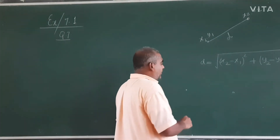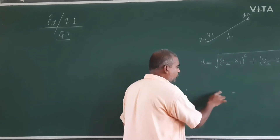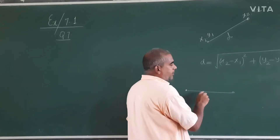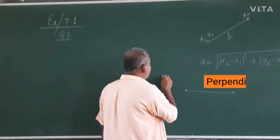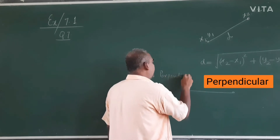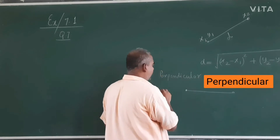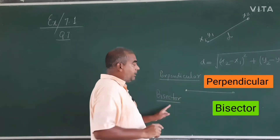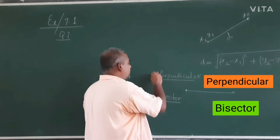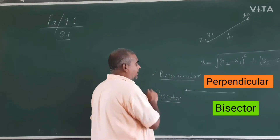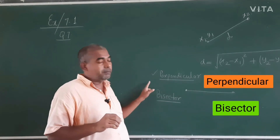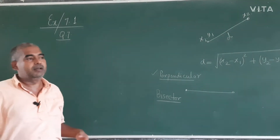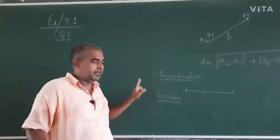Whenever there are two points and you are asked to find the midpoint of these two points — when you join them by a line, what is the midpoint? At that time, what you were taught involved two important terms: perpendicular and bisector. Both terms are important. Something may be perpendicular but not a bisector, or a bisector but not perpendicular, so both must be satisfied.